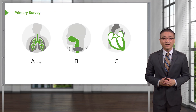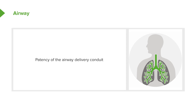A is again for airway. In assessing airway, we are evaluating the patency of the airway delivery conduit. This includes the mouth, the posterior pharynx, upper airways, the trachea, and several divisions of the trachea.